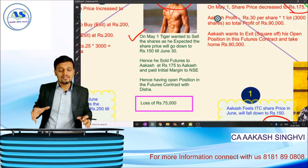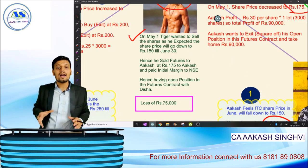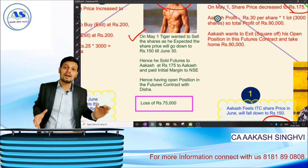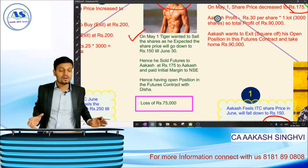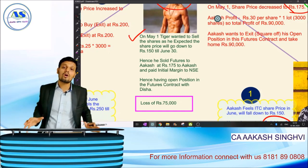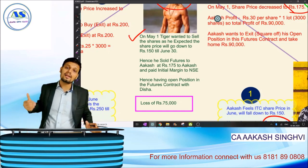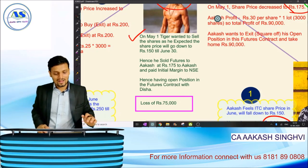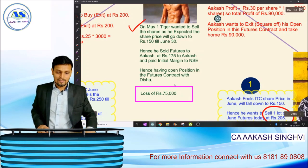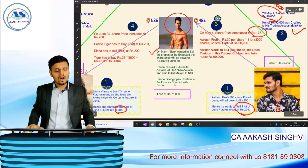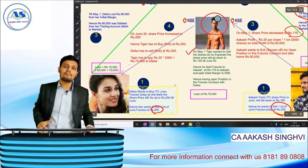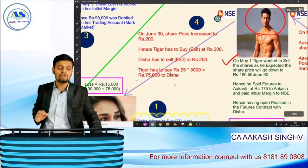Akash has now exited the futures contract — he sold earlier and has now bought, so he is no longer relevant to this contract. He took a profit of 90,000 rupees and exited. Tiger has sold at 175 rupees. So we have covered three steps; now let's go to the final step — the expiry date of June 30.